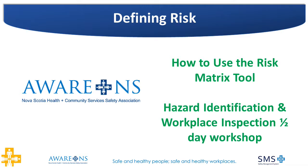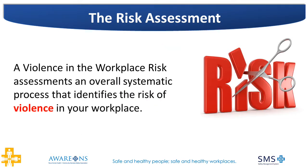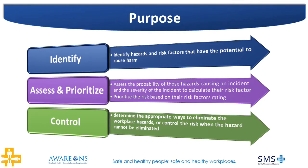For this module, all we need to understand is that risk is the relationship between the probability of a hazard occurring and the severity or level of harm that a hazard can cause. A violence in the workplace risk assessment is therefore an assessment that considers all the hazards as they relate to workplace violence, categorizes them, and ranks them by priority and aids in providing controls to prevent or reduce exposure. It does this by first identifying workplace hazards and risk factors that have the potential to cause harm, then calculating and prioritizing the workplace risks associated with the hazard, and finally determining the appropriate controls to use in order to eliminate the workplace hazards or control the risk when the hazard cannot be eliminated.